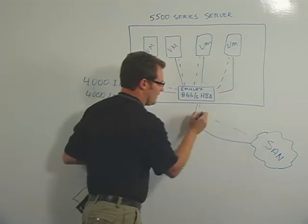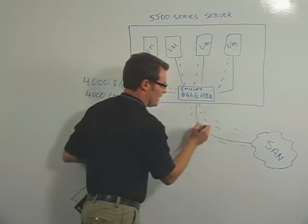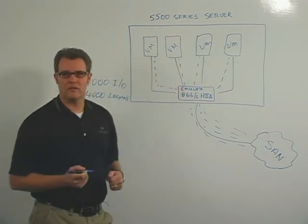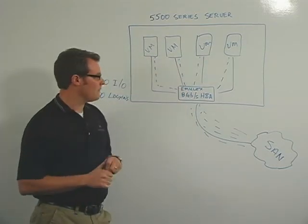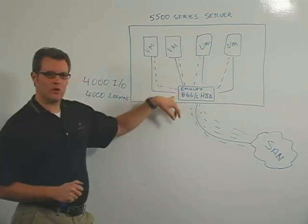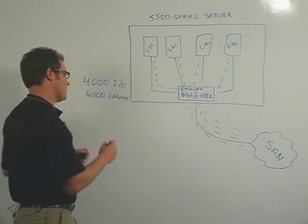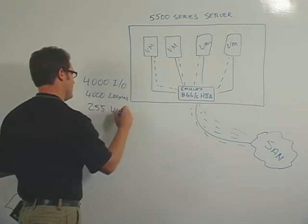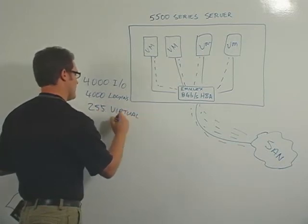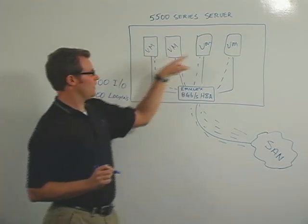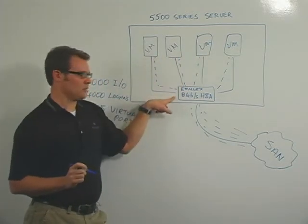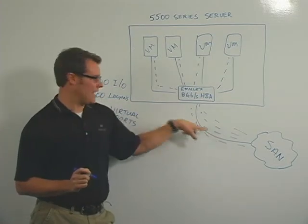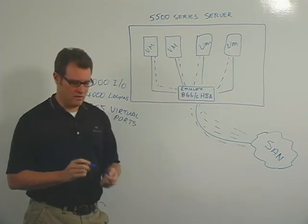And also on the SAN, this single Emulex HBA port appears as, in this case, 4 different HBAs on the SAN. In the case of scalability for this, Emulex supports up to 255 virtual ports. That means that we can, there can be 255 of these virtual machines talking to one Emulex HBA, 255 Emulex personalities coming off of this one HBA.